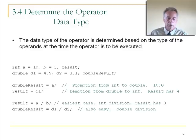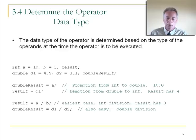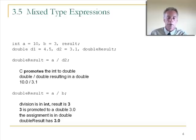Looking at division examples: A divided by B is an integer division giving 3, assigned to int result — no mixed types there. Double result = D1/D2 is also straightforward — all variables and operators are double. Now for more interesting cases: double result = A/D2, where A has 10 and D2 has 3.1. We have int divided by double — there's no operator for that, so C must decide which type to use.